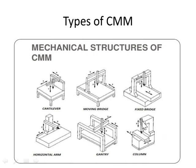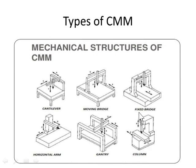The sixth type is the column type, which is quite similar to cantilever — one end fixed and another end free. But the difference is that in the column type, the bed moves in the horizontal direction, while only the probe moves in the vertical direction. In the cantilever type, both the probe and column can move in all directions. This is the major difference between cantilever and column. So those are all six types: cantilever, moving bridge, fixed bridge, horizontal arm, gantry, and column.